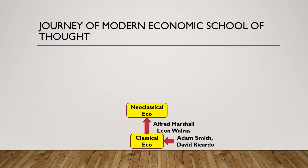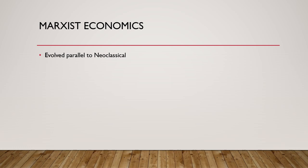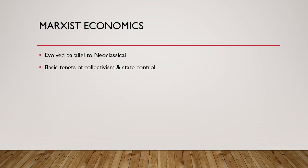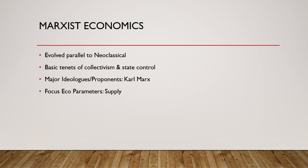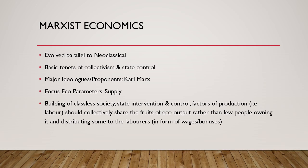In parallel to the neoclassical school, another school developed: Marxist economics, by Karl Marx. Unlike the classical and neoclassical schools, the basic tenets of Marxist economics were collectivism and state control and intervention. It propagated building a classless society with state intervention and control over the factors of production, arguing that those factors of production should collectively share the fruits of economic output, rather than having a few owners distribute some of it to laborers as wages and bonuses.